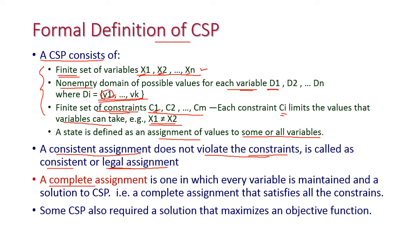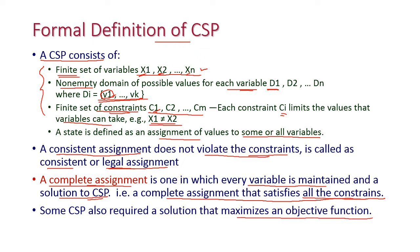A complete assignment is one where every variable is assigned a value. A solution to a CSP is a complete assignment that satisfies all the constraints. Some CSPs also require a solution that maximizes an objective function.